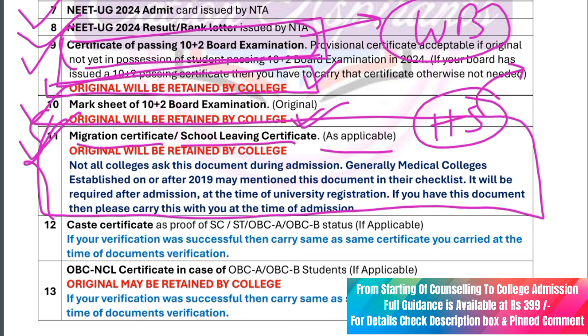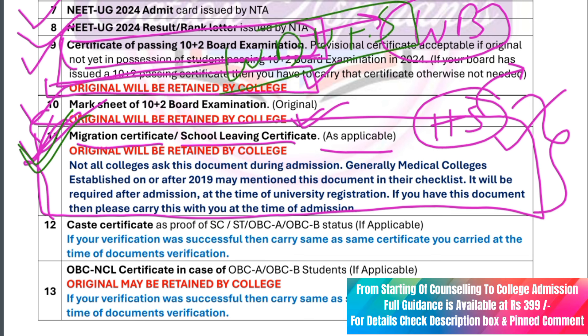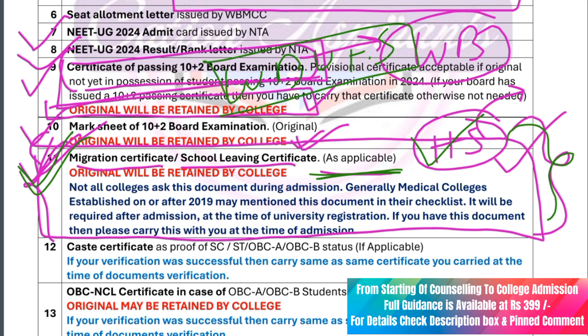When you have the migration certificate in the admission, you will do a checklist. For government medical college, you will leave a checklist. If you don't have this, you will cancel your admission. Because you have to apply the migration certificate, you will have to register at the University of Health and Sciences. You have to download the migration certificate. You can submit a license to the migration certificate.